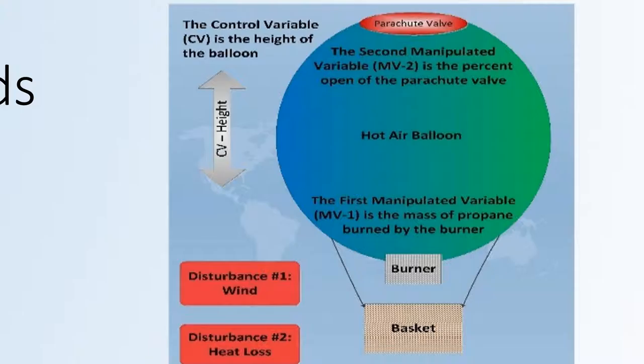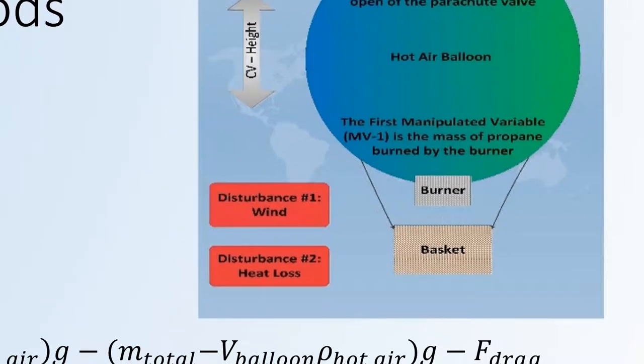That's what enables it to release hot air and descend at a relatively quick rate. So those are the two variables that we're manipulating in order to achieve our control variable of altitude. These are a couple of disturbances that we have: wind and heat loss. We'll talk a little bit later about how we're able to model those.